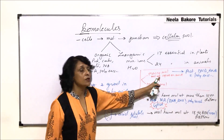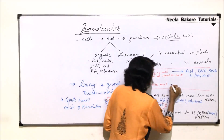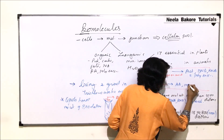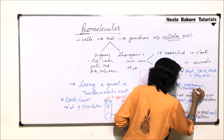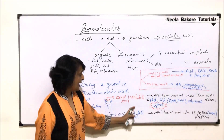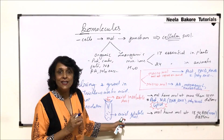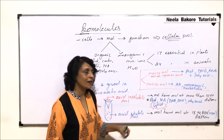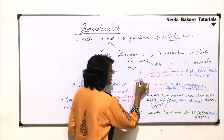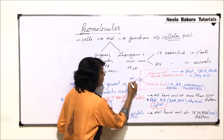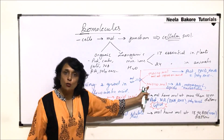Micromolecules include amino acids, monosaccharides (simple sugars), and nucleotides. These are found in the acid-soluble pool. Lipids are also placed in the micromolecule category because the criterion of division is molecular weight. According to molecular weight, lipids come under micromolecules, but separation-wise they are found along with macromolecules.